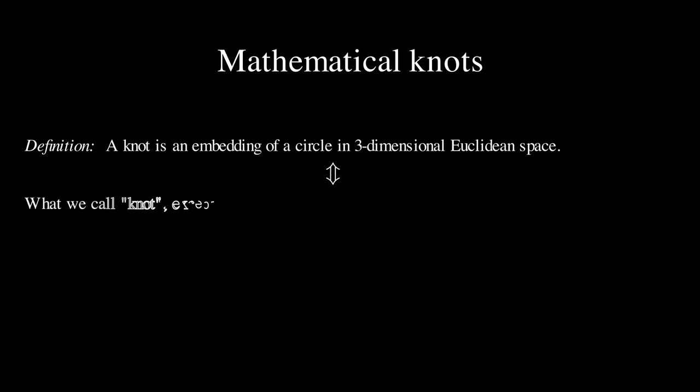A formal definition of a mathematical knot is the next one. A knot is an embedding of a circle in three-dimensional space. In other words, a mathematical knot is almost the same as the regular ones, except that its ends are tied together, not allowing the rope to return at the initial position.